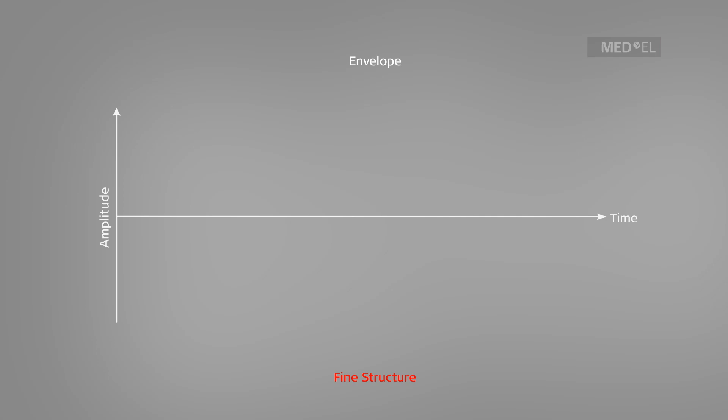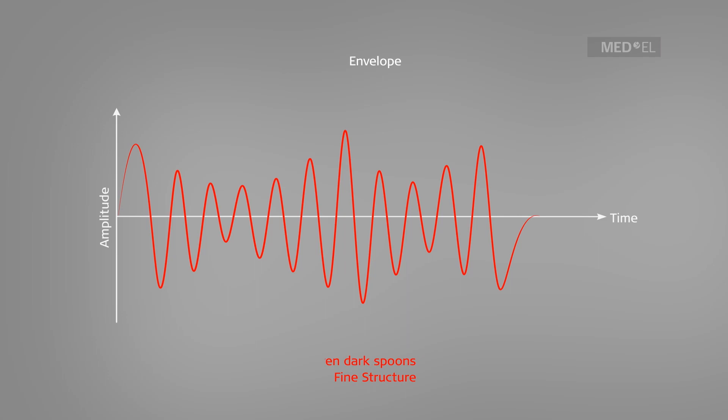Consider the following combination of two speech sounds. This sound, Kathy has seven dark spoons, is the fine structure of one sound.